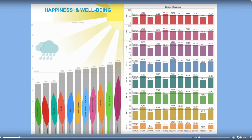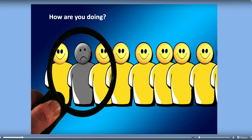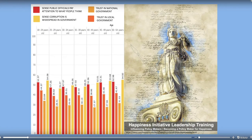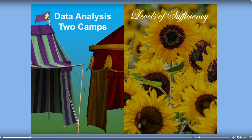Here's an example of one way of showing data — showing the different domains and the scores — and another way where we can see data over time. I'm going to show you one report we have, the Family Happiness Handbook, which shows how people are doing in terms of sense of feeling loved. You can also see how to use data in terms of influencing policymakers — for example, looking at data for young people to older people to see how they feel about trust in government, which is all pretty much quite low.